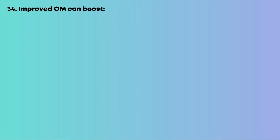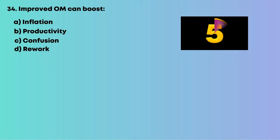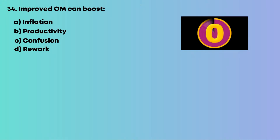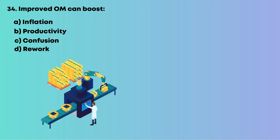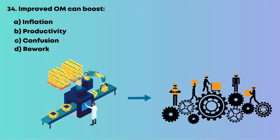Question 34: Improved operations management can boost: A, inflation; B, productivity; C, confusion; D, rework. Better processes result in higher output. So the answer is B, productivity.